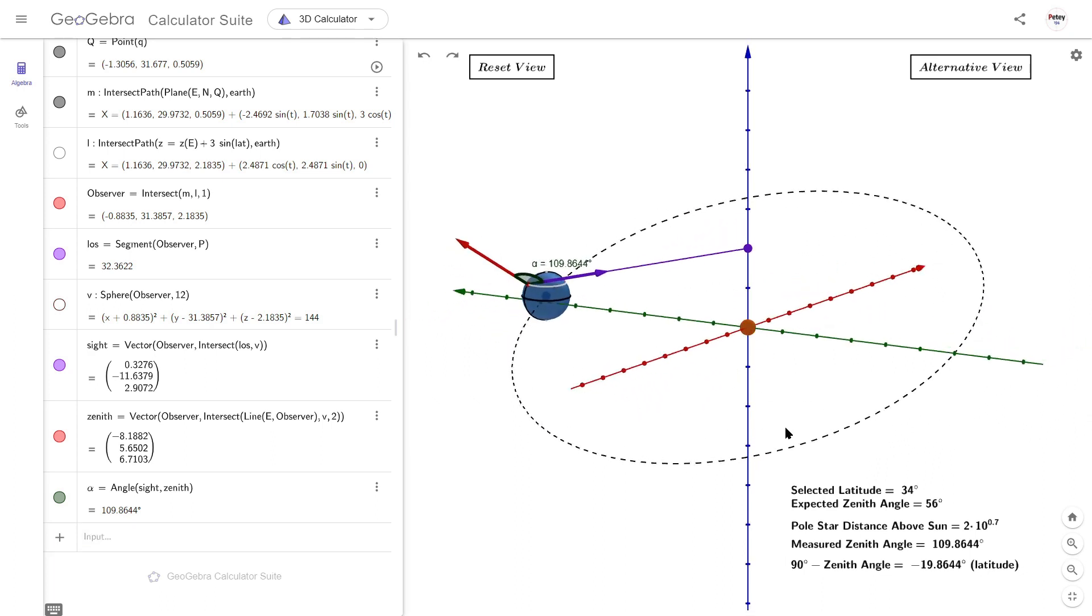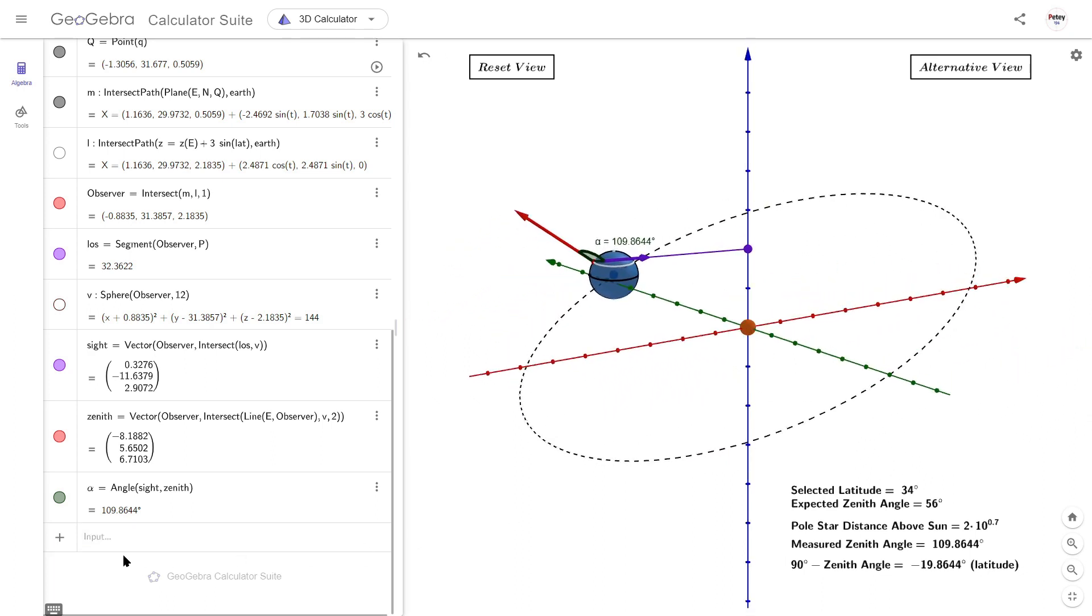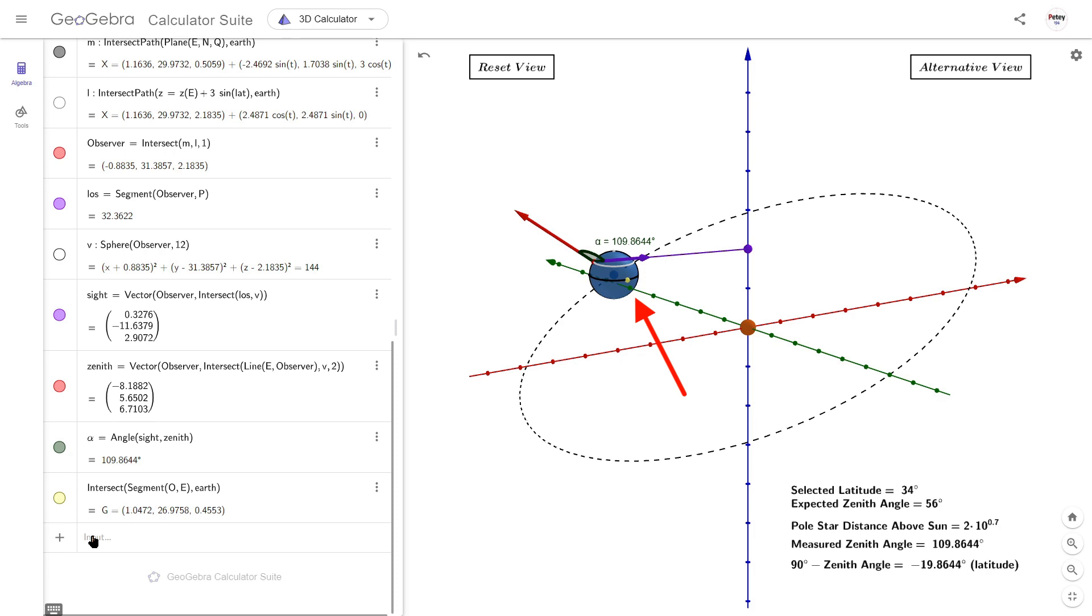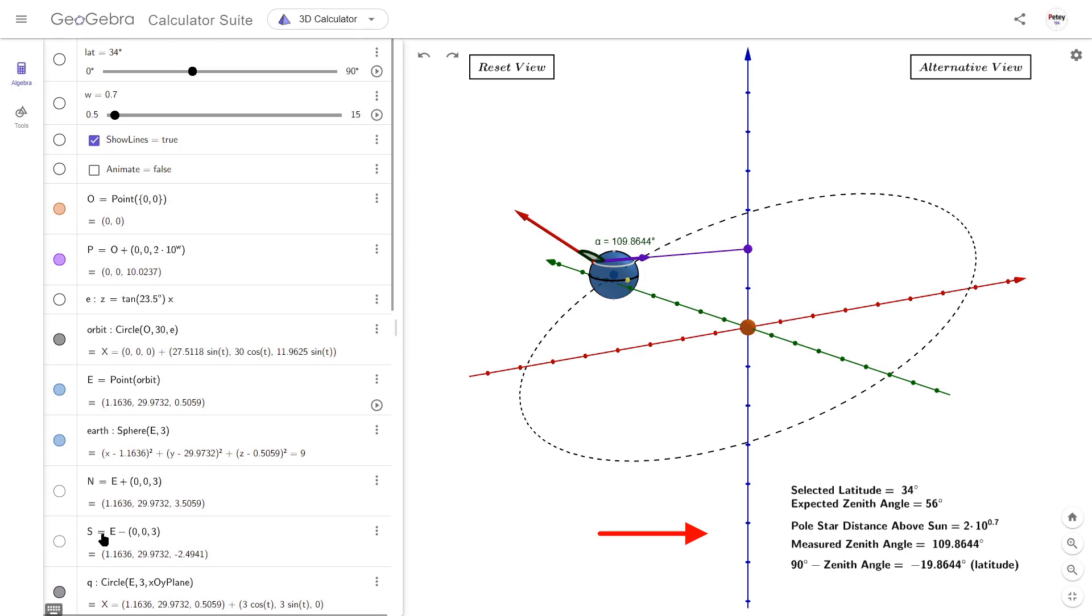But before I set this thing in motion, let me just quickly add a yellow GP point for the sun. Okay, let's start the animation and see what happens to these text values when we start to move Polaris away.